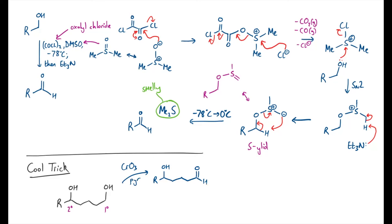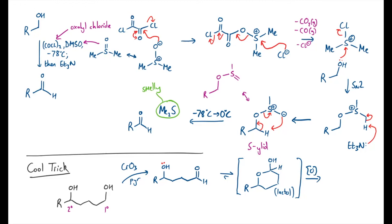The problem with this 1,5 setup is that it's very likely to cyclise just using the lone pairs on that secondary hydroxyl group. This cyclised product — sometimes called a lactol — could be more stable than you'd expect due to the anomeric effect, but I'll leave that for another video to explain. The issue is that you might not be able to isolate this lactol. There's still a hydrogen on there, and your oxidation method of choice — say your chromium trioxide-pyridine mix — could easily oxidise it up again to give you the lactone, or cyclic ester. Now that might be what you want, and that's all good.